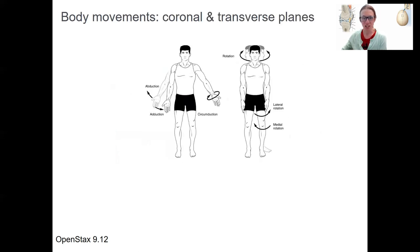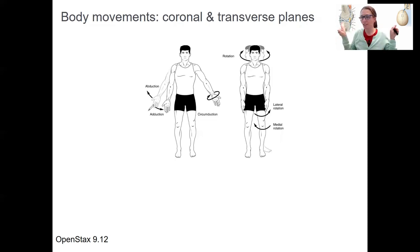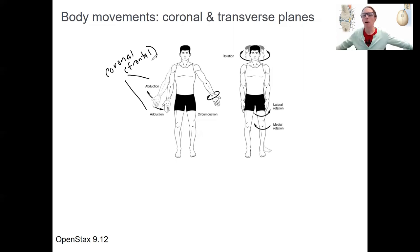Movements in the coronal or frontal plane — same thing — and the transverse plane are different. In the coronal plane, the arm going out and in, or the legs going out, like jumping jacks, involves abducting and adducting with both sets of appendages. 'Add' suggests adduction — coming together; abduction is the opposite, taking the limb away.